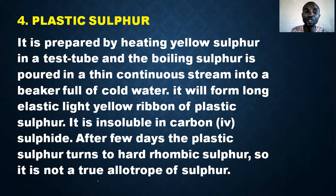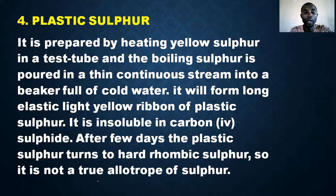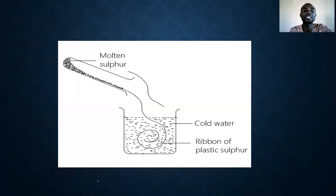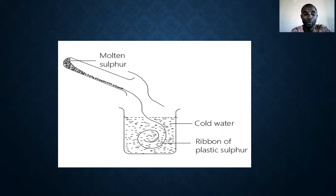After some time, the plastic sulfur changes to rhombic sulfur. Look at the shape here — after being heated, the sulfur is poured into cold water and forms this particular ribbon shape. We call it the elastic ribbon of plastic sulfur.